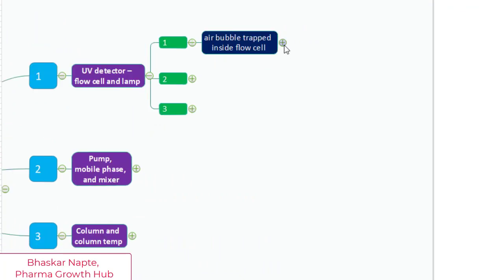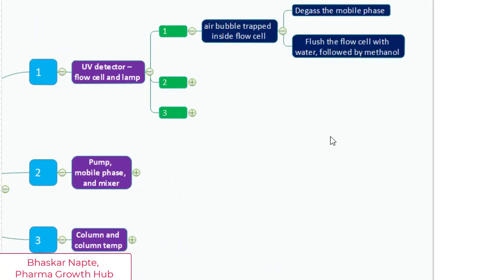The first point is air bubbles inside the flow cell. It is important to degas both aqueous and organic mobile phases for gradient operation. You must also degas the mobile phase even for isocratic operation, but it becomes very critical when it comes to gradient operation.